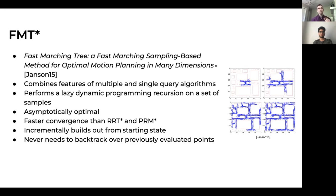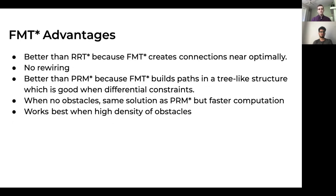FMT* builds out incrementally from the start location, whereas RRT* samples anywhere in the space. This means FMT* only processes points that are the next step in the building tree, so it never has to backtrack for rewiring — which is computationally expensive. It creates connections near-optimally with no rewiring, making it better than RRT*. It's also better than PRM* because it builds paths in a tree-like structure. When there are no obstacles, it gives the same solution as PRM* but finds it faster. FMT* was really built for environments with a high density of obstacles.